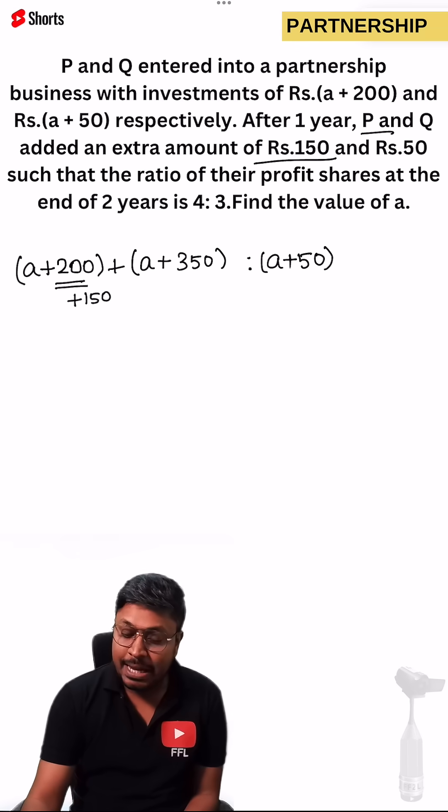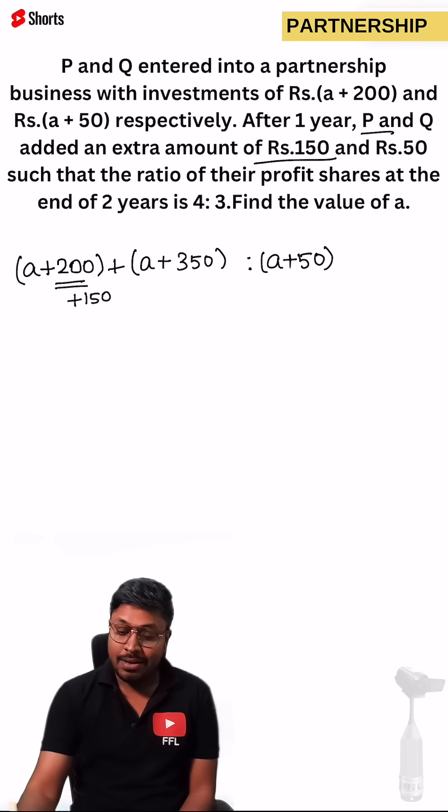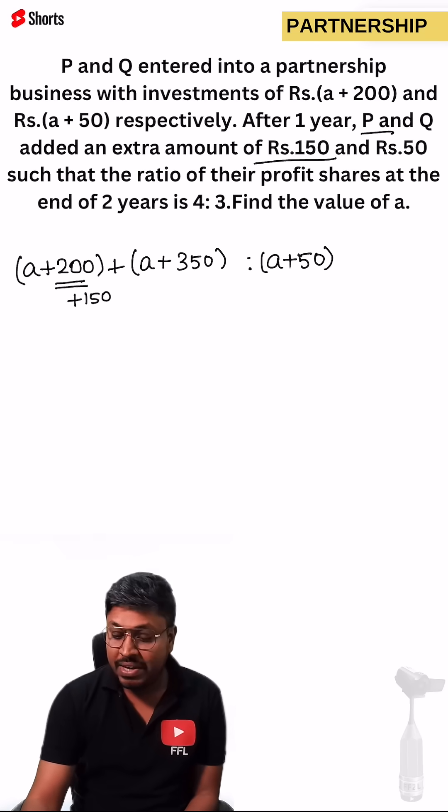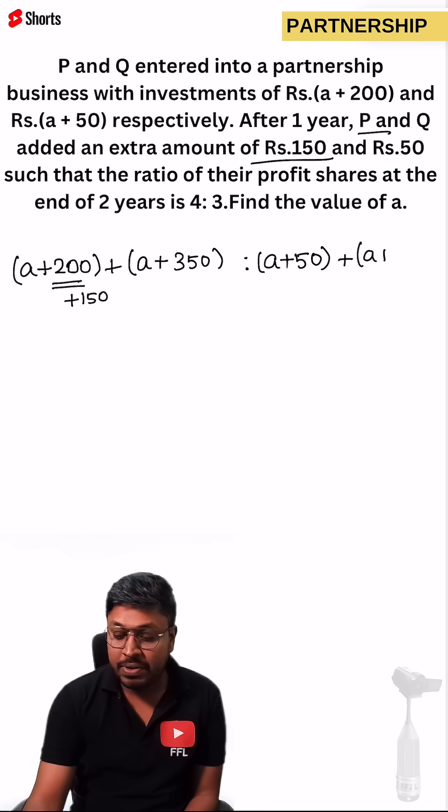And similarly, the second person Q added 50 rupees extra. Already he is investing 50, now adding another 50 to the amount. So now we can say that for the next year his amount will be A plus 100.